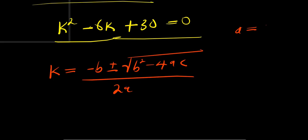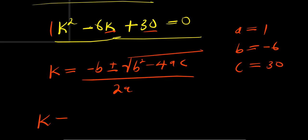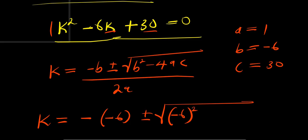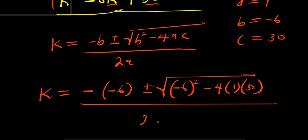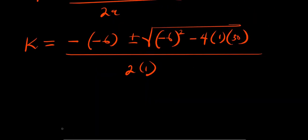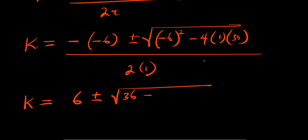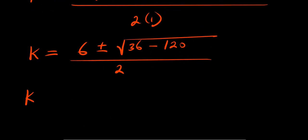Substituting into the formula: k equals negative times negative 6, plus or minus square root of negative 6 squared minus 4 times 1 times 30, divided by 2 times 1. This gives k equals 6 plus or minus square root of 36 minus 120, divided by 2, which simplifies to k equals 6 plus or minus square root of negative 84, divided by 2.